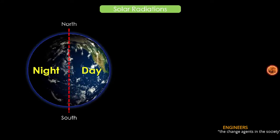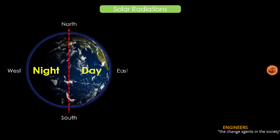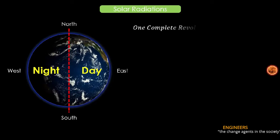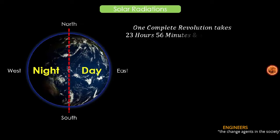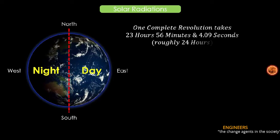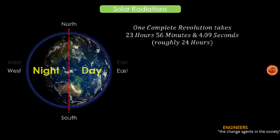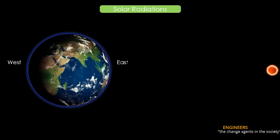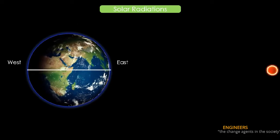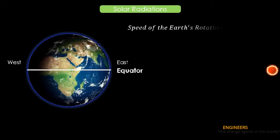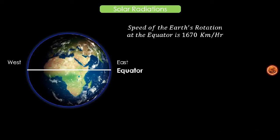Earth rotates west to east, and one complete revolution takes 23 hours, 56 minutes, and 4.09 seconds, roughly counted as 24 hours. The speed of the earth's rotation at the equator is 1670 kilometers per hour.